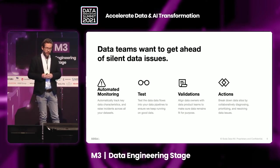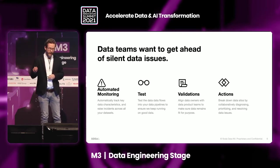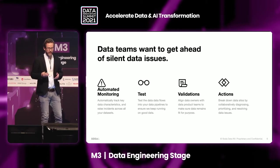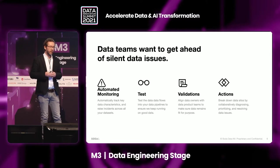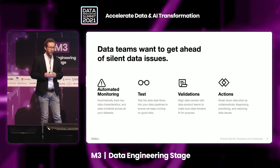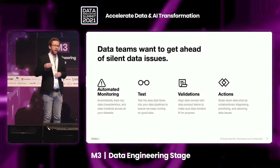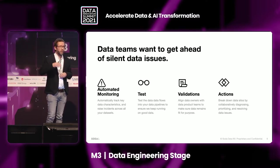The fourth area is actions. The previous three have been centered around detecting and finding issues. Actions is more around data resolution — once we've identified an issue, we need to keep track of it so someone will address it, and once it's addressed, we can mark it as done. Soda actions is more of a roadmap item; we're looking to start working on that in Q4 this year. It's going to be a simple if-this-then-that type config so that if there's a data quality issue, you could create a ticket in JIRA or PagerDuty, for example.